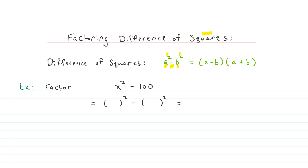So you recognize this pattern, and what you want to do is identify a and b. Once you have a and b identified, you're set and ready to go, because literally all you do is plug a into the first term of the factored form and plug b into the second term. You're done — you've totally factored it. These can go pretty quickly once you learn to identify a and b.